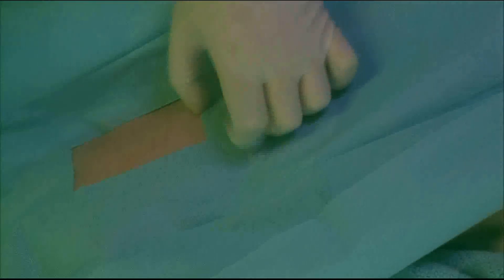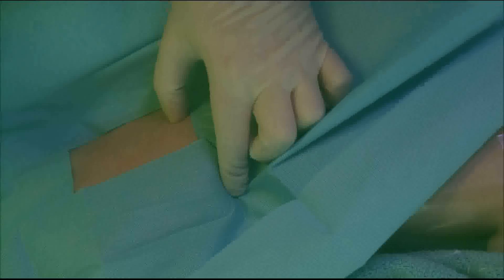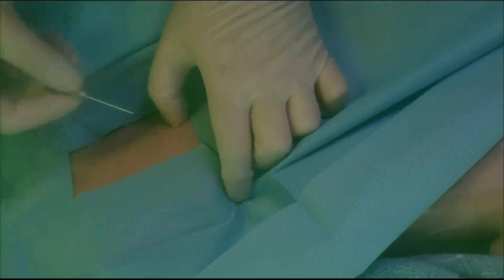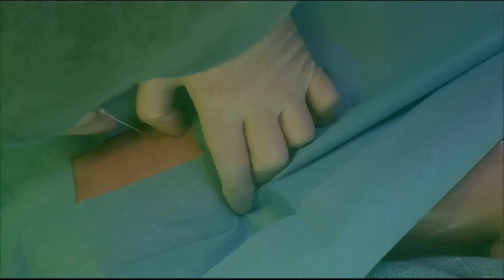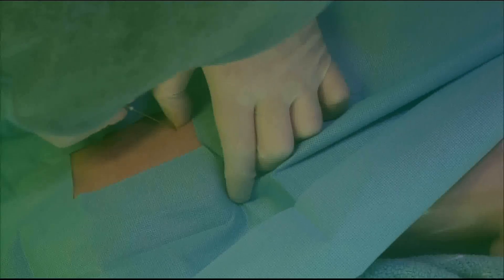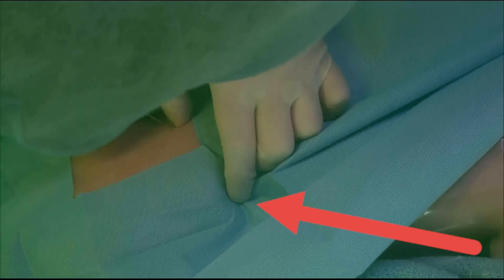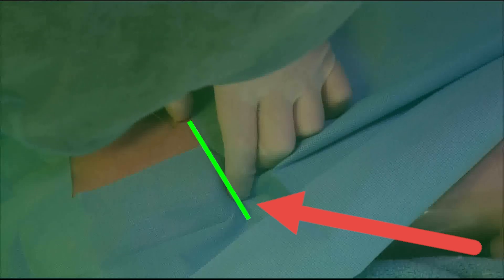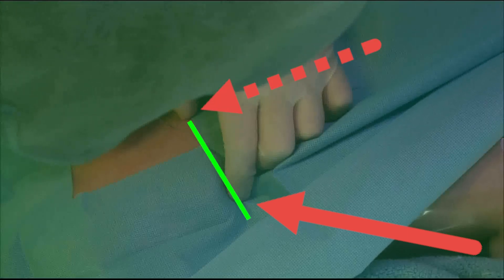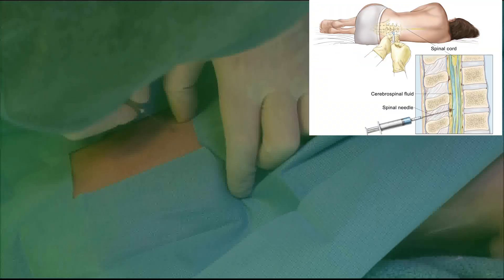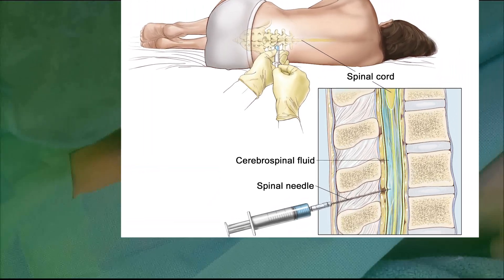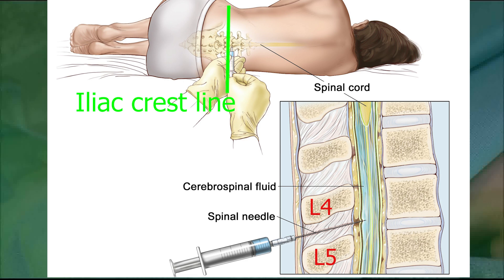The patient is initially positioned in a lateral decubitus position. Some surgeons prefer the prone position, but the technique is essentially the same. With my index finger, I am palpating the iliac crest, and along the same line with my thumb, I am palpating the spinous process of what is believed to be L4. My needle is going in between the spinous processes of L4 and L5, in that soft space between them — just the same way a lumbar puncture is performed.